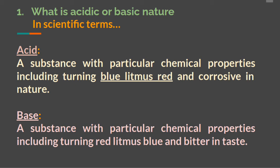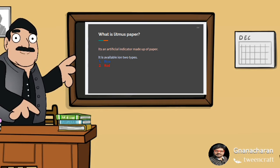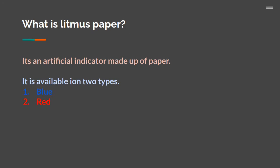Now let us understand what is base in scientific terms. Base is also a substance with particular chemical properties, including turning red litmus to blue and bitter in taste. Litmus paper is an artificial indicator made up of paper. It is available in two types: one is blue and another one is red. The litmus papers are available in the market. You can get litmus papers from any stationery shop and do the experiments on your own.